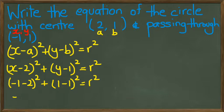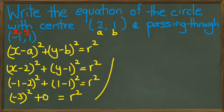Which means we're going to end up with (-3)² + 0 = r², or in other words r² = 9, therefore the radius is equal to 3.